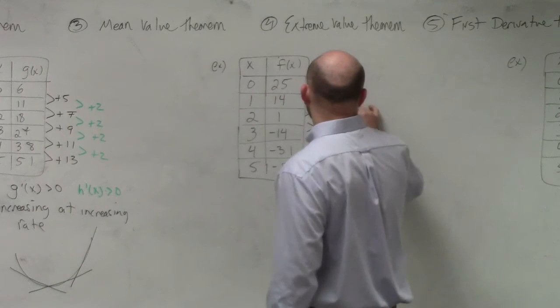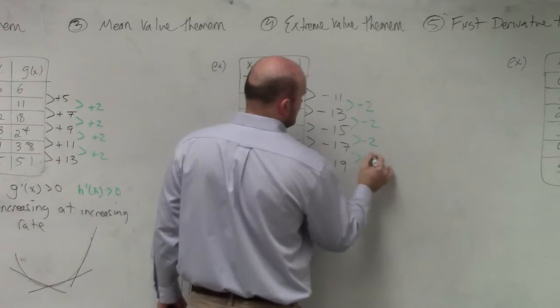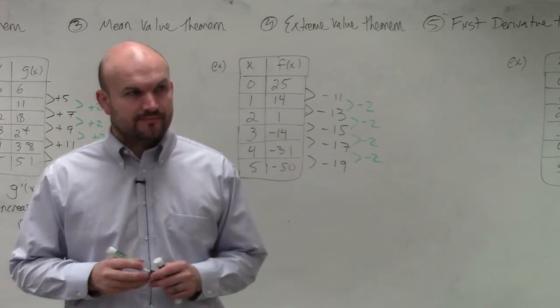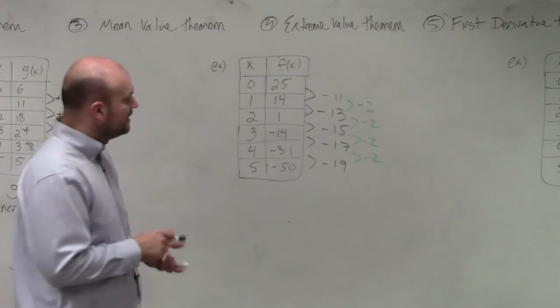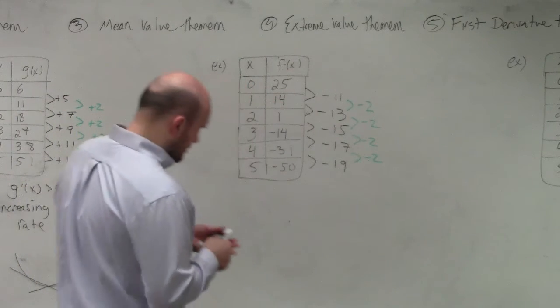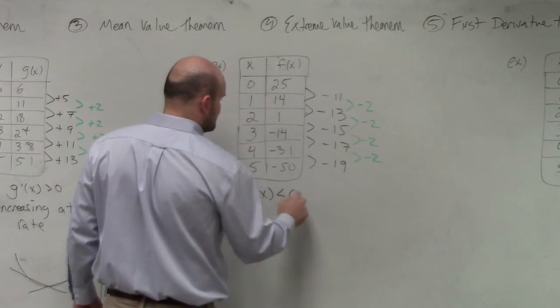And then also, you can see that my second derivative is also negative, right? And it's getting negative at a constant rate here. So we could say that f prime of x is less than 0.